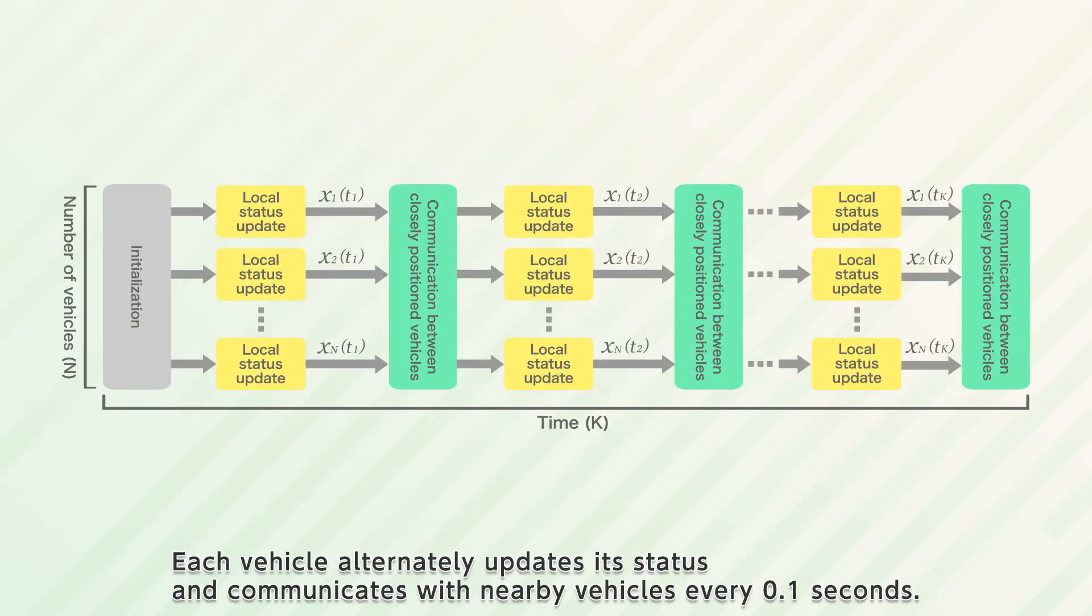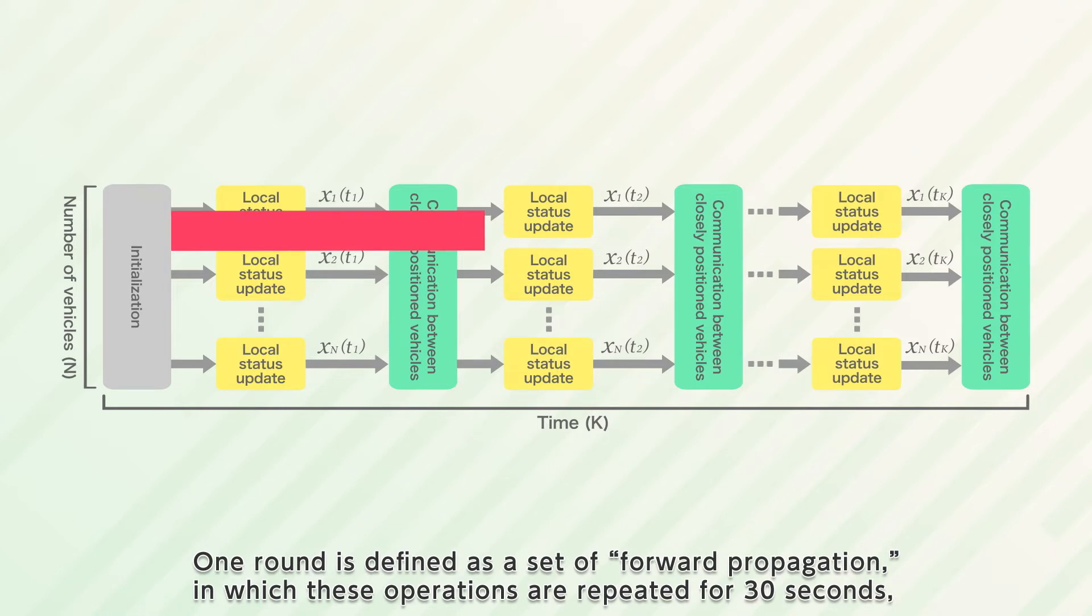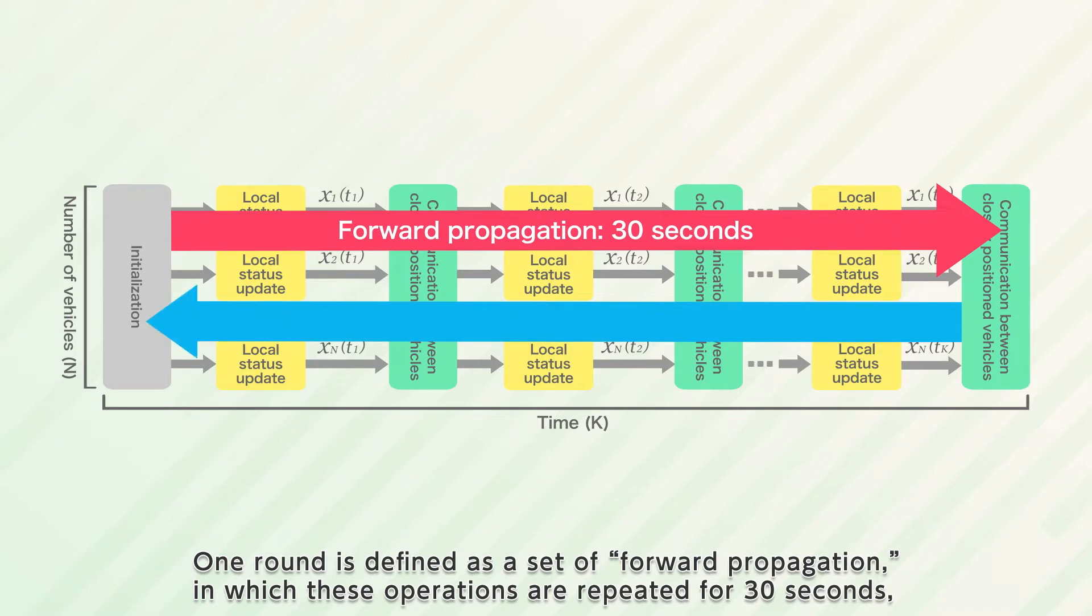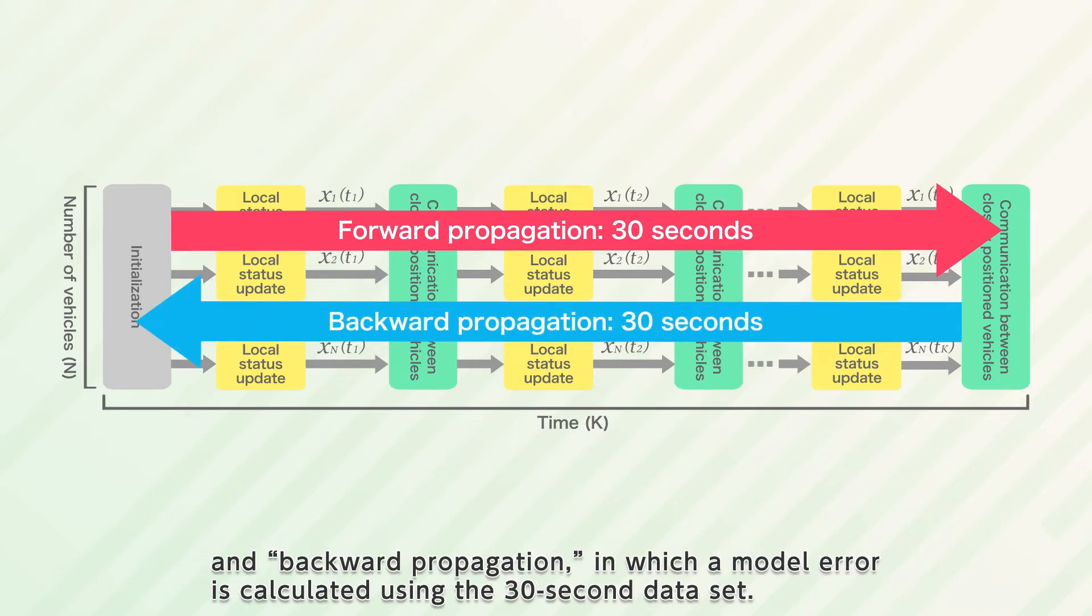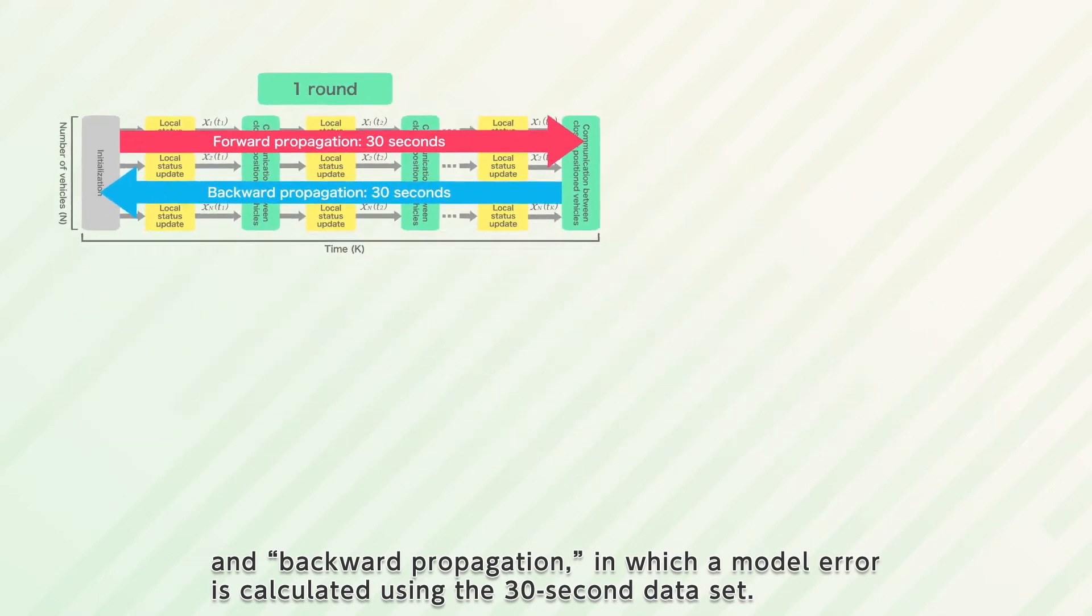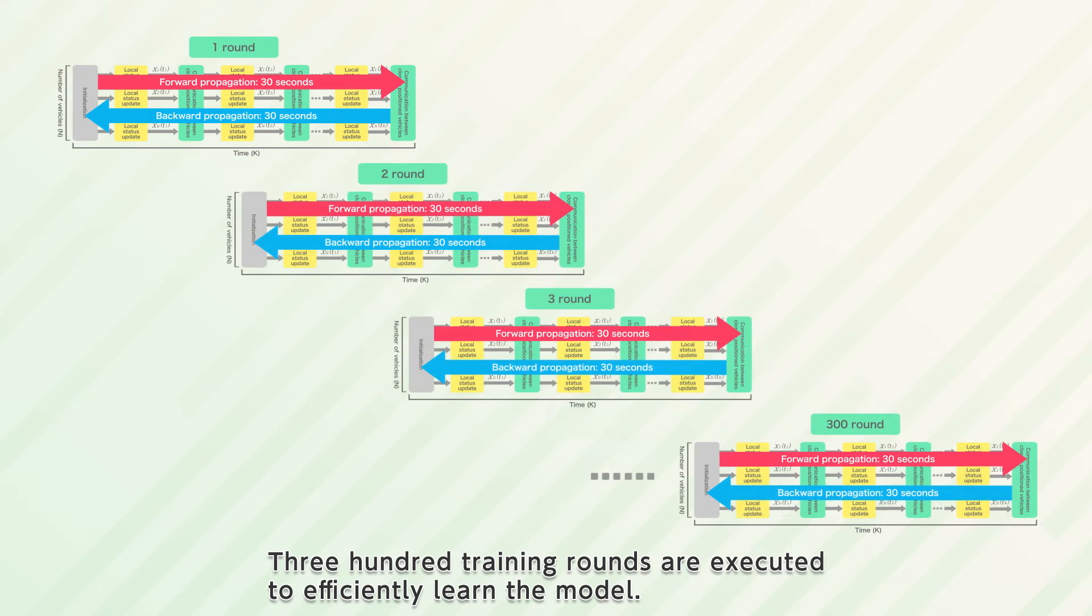Each vehicle alternately updates its status and communicates with nearby vehicles every 0.1 seconds. One round is defined as a set of forward propagation, in which these operations are repeated for 30 seconds, and backward propagation, in which a model error is calculated using the 30-second data set. 300 training rounds are executed to efficiently learn the model.